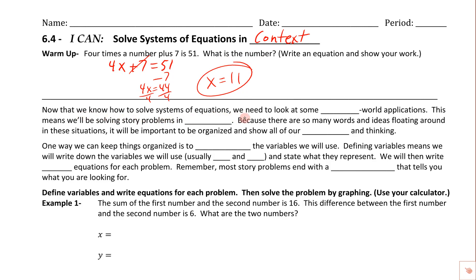Now that we know how to solve systems of equations, we need to look at real-world applications — solving story problems in context. Because there are so many words and ideas in these situations, it's important to be organized and show all our work. A key part of staying organized is to define the variables we use, writing down what x and y represent so people understand our thinking.